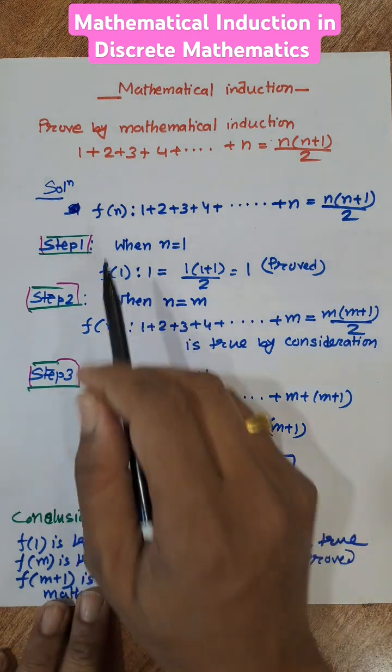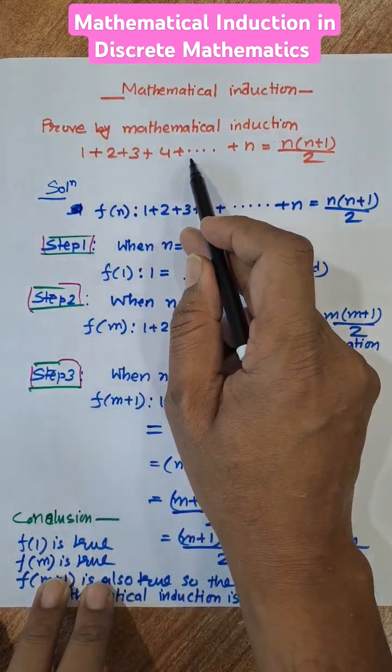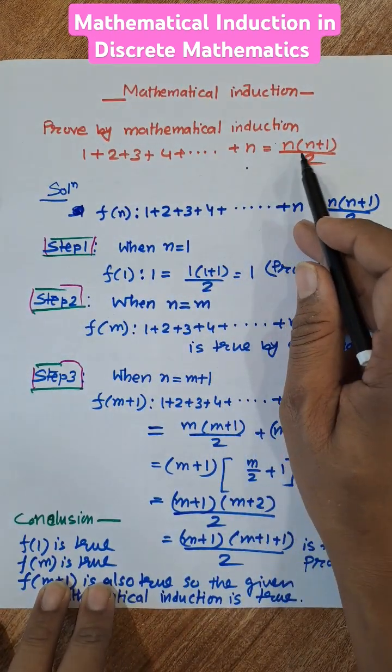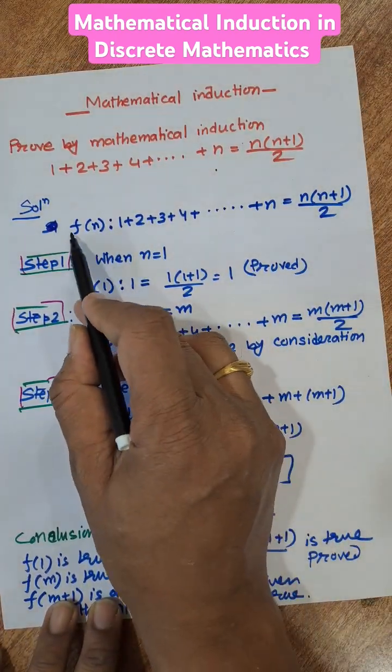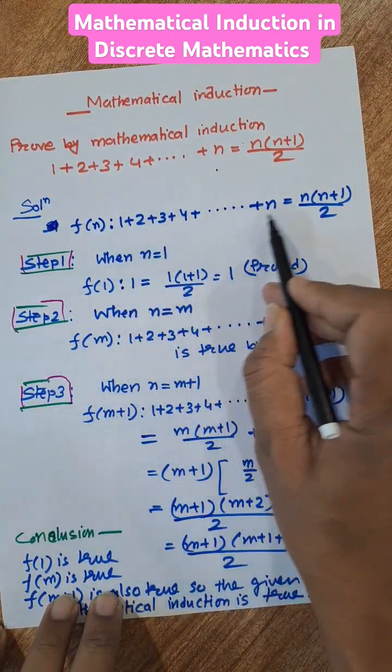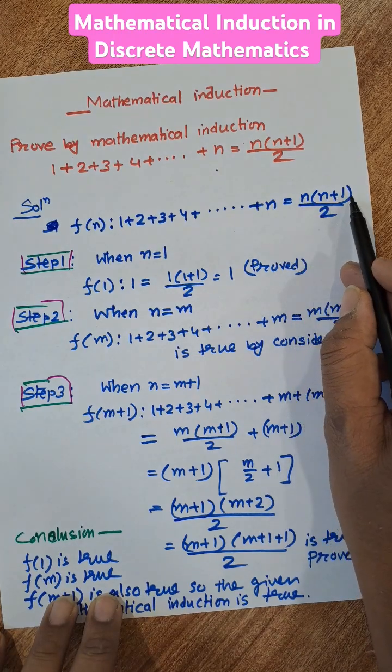We need to prove 1 plus 2 plus 3 plus dot dot dot n equal to n into n plus 1 by 2. So first of all we need to consider this is a function f of n: 1 plus 2 plus 3 dot dot n equal to n into n plus 1 by 2.